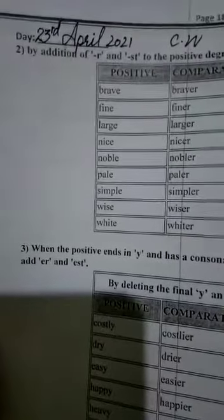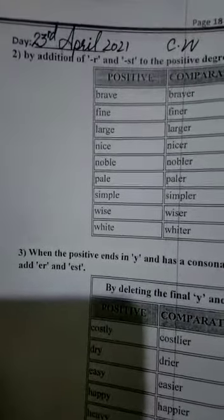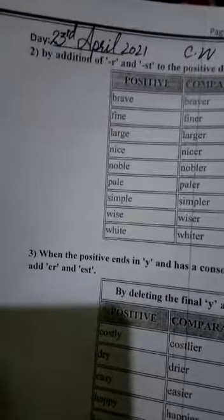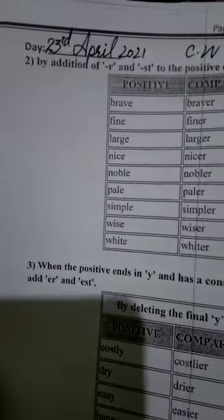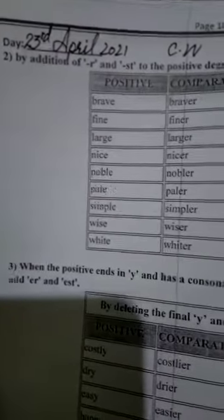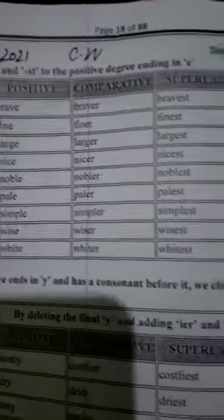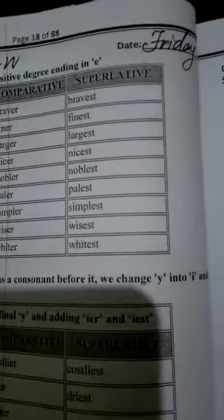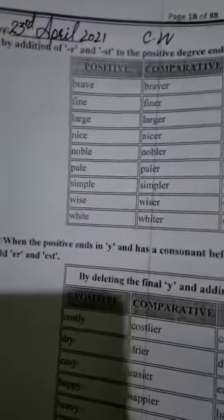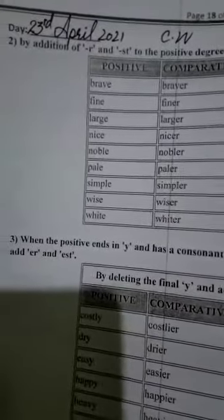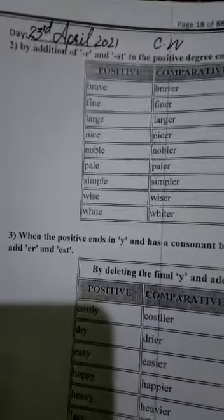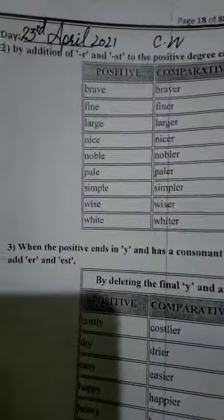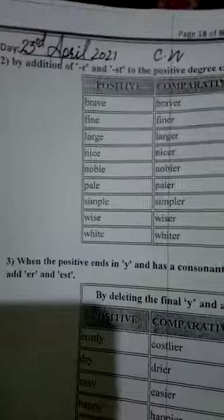Assalamu alaikum, students of 7th class. Open your workbook page number 18. Students, mention your date and day — the date is 23rd April 2021, classwork, and the day is Friday. We have already discussed adjectives and degrees of adjectives, kinds of adjectives. There is an exercise of adjectives.